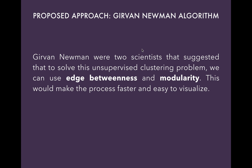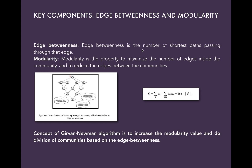The approach we are going to use today is the Girvan-Newman algorithm. The Girvan-Newman algorithm was stated by two scientists; it solves an unsupervised clustering problem by using two key components: edge-betweenness and modularity. This process is faster and very easy to visualize. Edge-betweenness is the number of shortest paths passing through that edge. Modularity is the property to maximize the number of edges inside the community and to reduce the edge-betweenness edges between the communities.